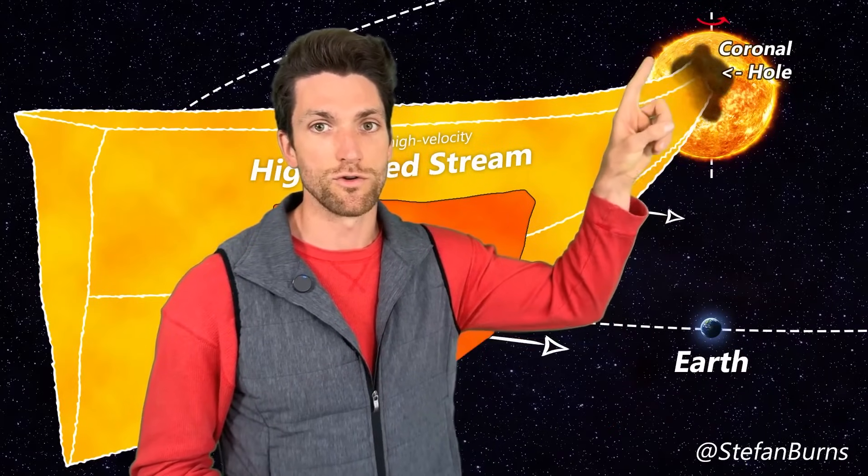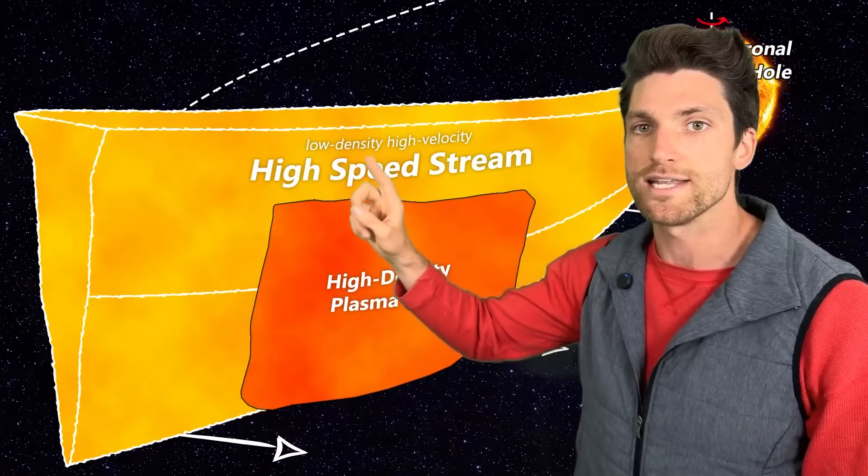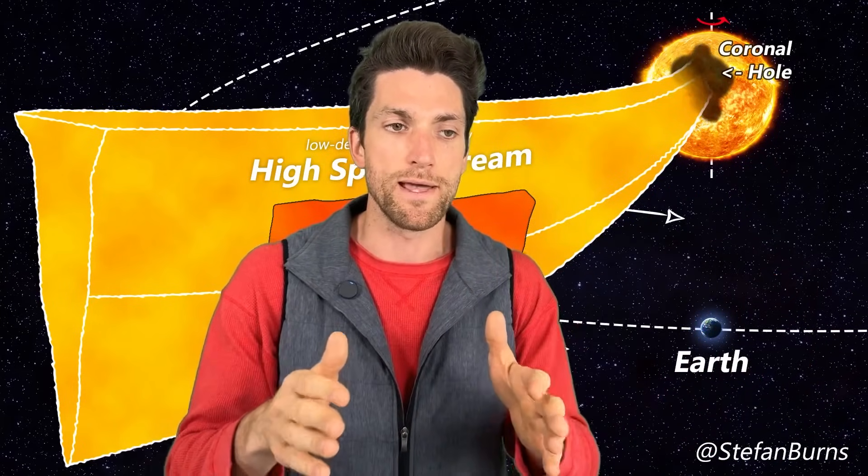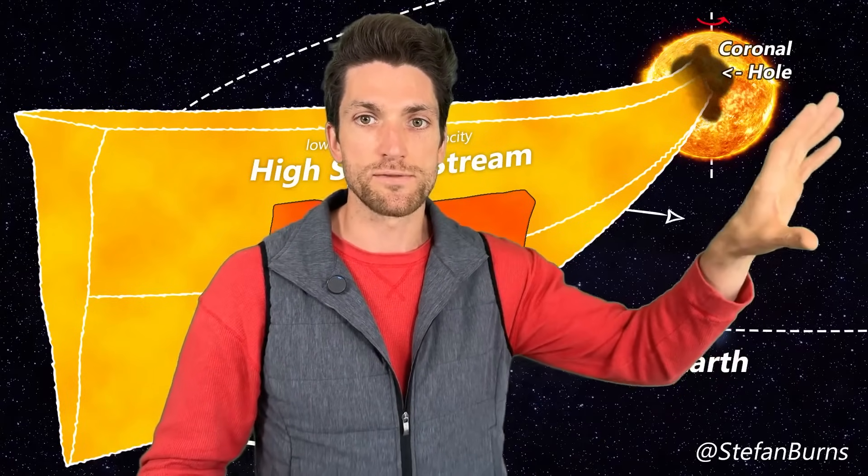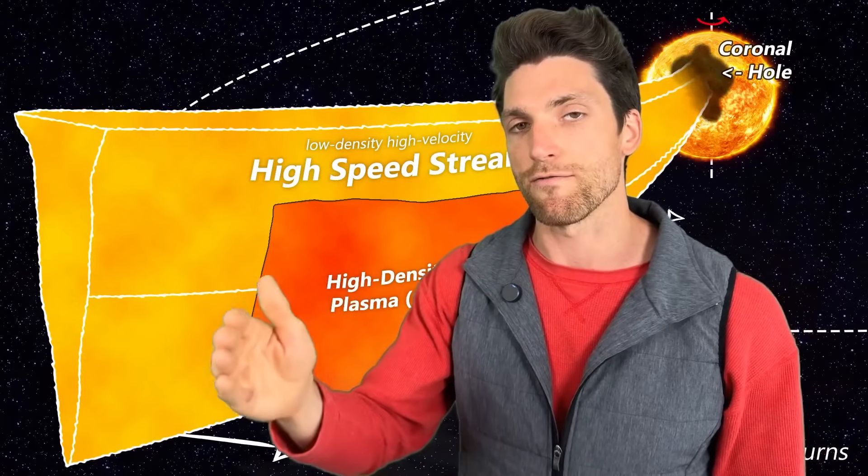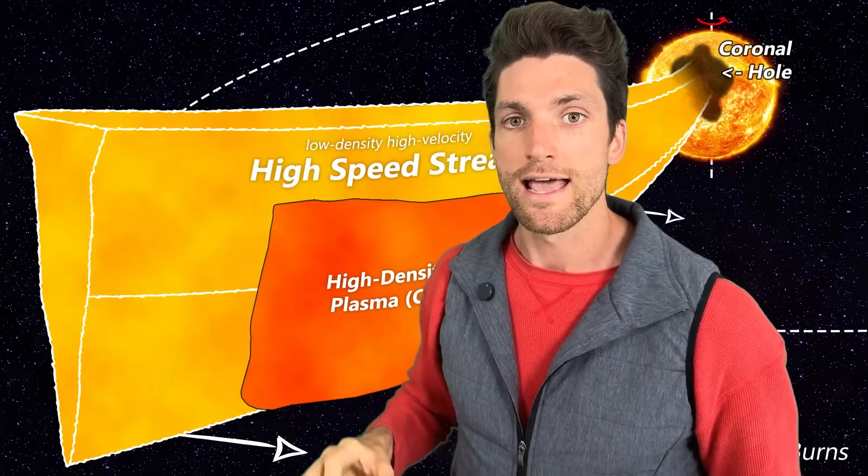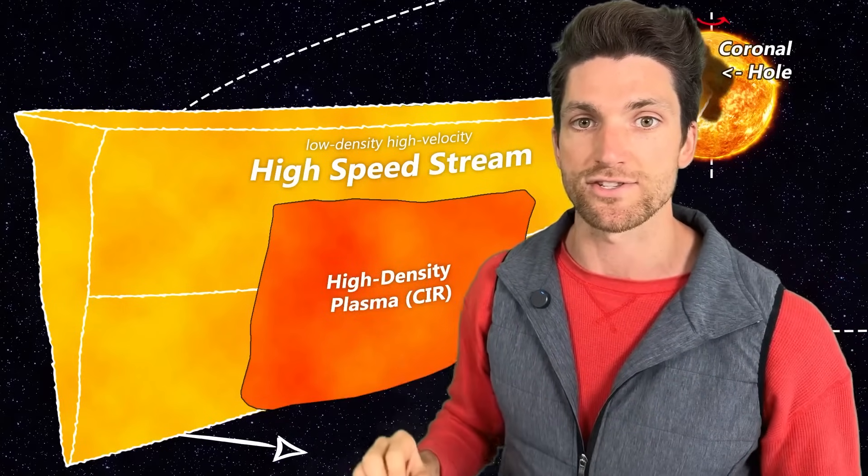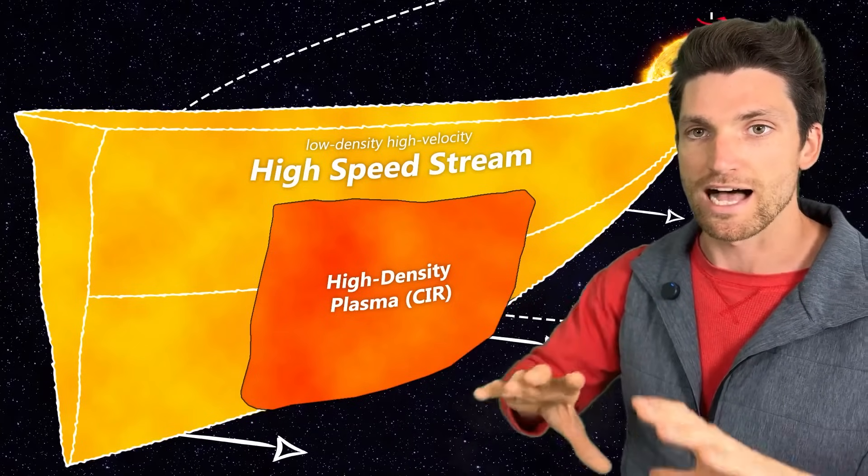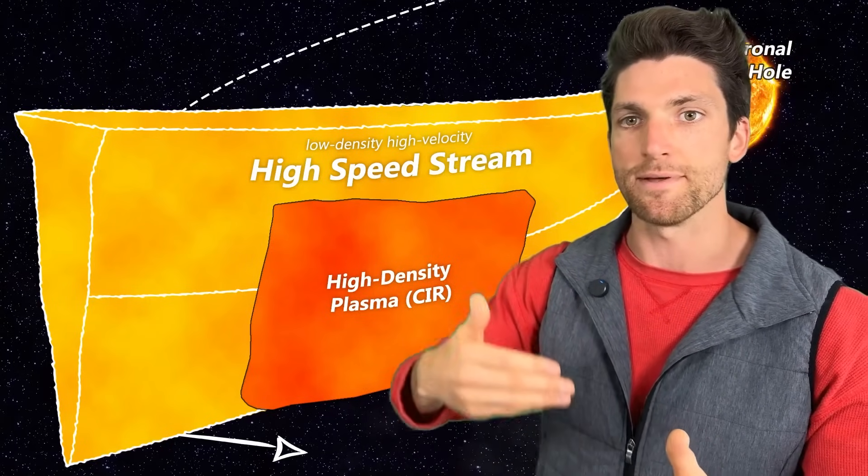So here we have our sun and we have this coronal hole there. This is just an illustration and we see that we have this high-speed stream flowing out of it. It is a low density and a high velocity. These are plasma ions that are flowing out of the sun because the magnetic field is open and charge carriers, ions, they flow along magnetic fields, and so this open magnetic field configuration causes these ions to flow out very quickly. The velocity of a high-speed stream is typically about 450 to 800 kilometers per second, which is in general faster than the ambient solar wind velocity.